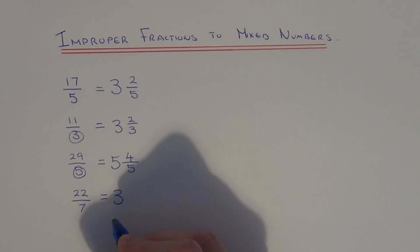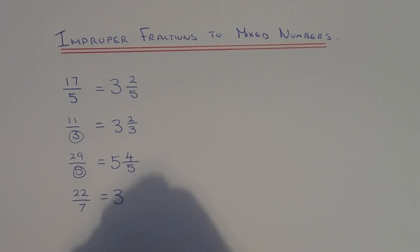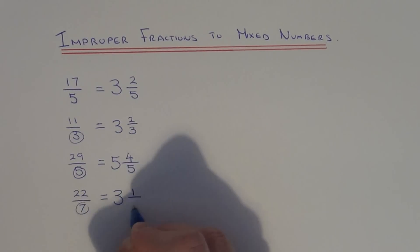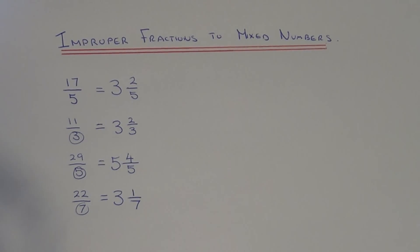So we get 3 as the whole number. We've got a remainder of 1 this time, so put that on the numerator, and keep the denominator the same. So you get 3 and 1 seventh.